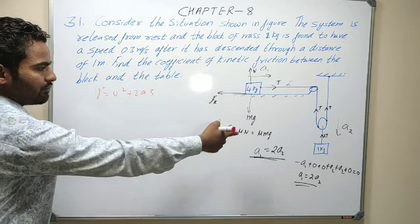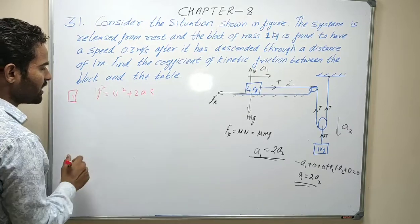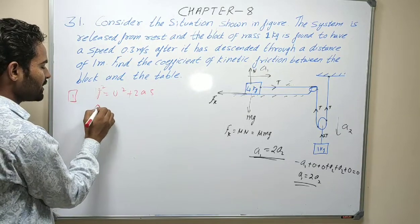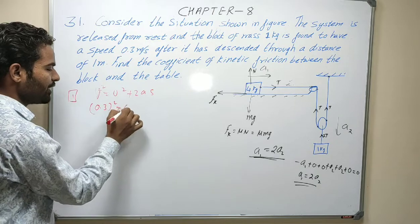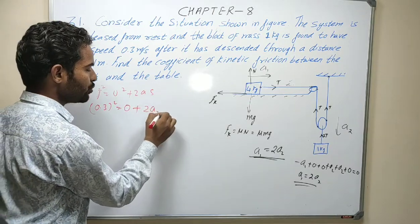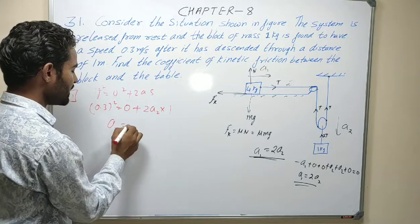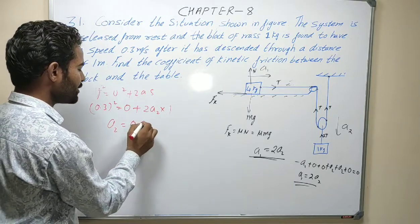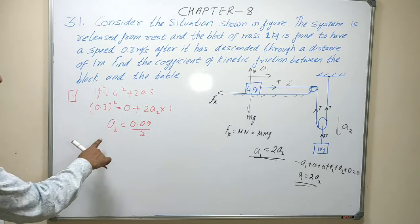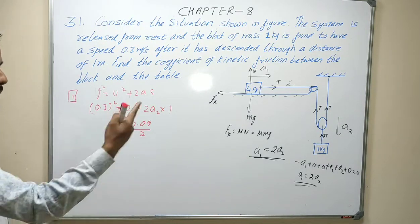So A1 is equal to 2A2. Using kinematics: final speed is 0.3, so 0.3 squared minus initial speed 0 equals 2 times A2 into S, where S is 1 meter. So A2 will be 0.09 upon 2.